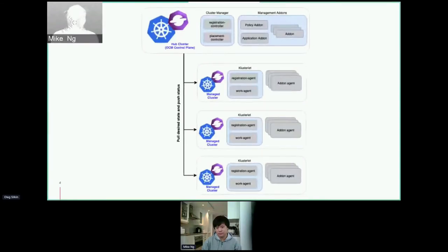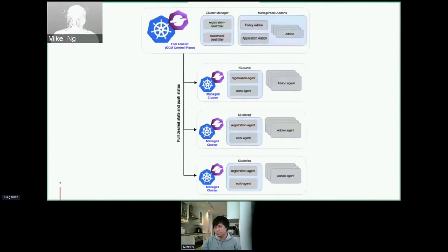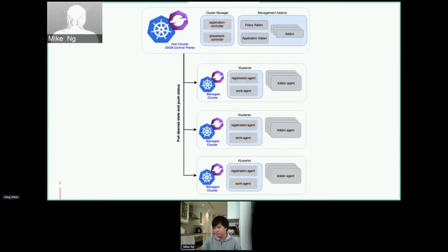Open Cluster Management overall is like a microkernel operating system. It has foundational parts to provide the core functions described, but also has various add-ons to extend different capabilities. Some of the built-in add-ons are the policy add-ons described earlier, as well as the application delivery add-on. They're also highly modular and can be deployed separately, which makes it easier for projects to adopt the Open Cluster Management API so they can become multi-cluster aware.